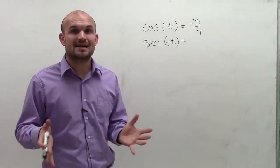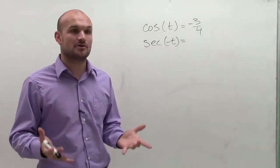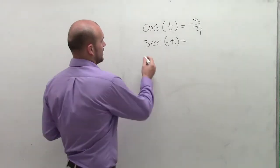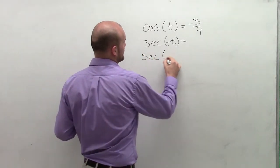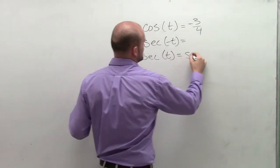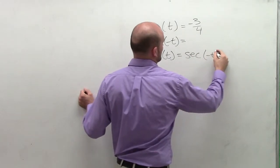So remember, cosine and secant are both even functions. Therefore, the secant of t is equivalent to the secant of negative t.